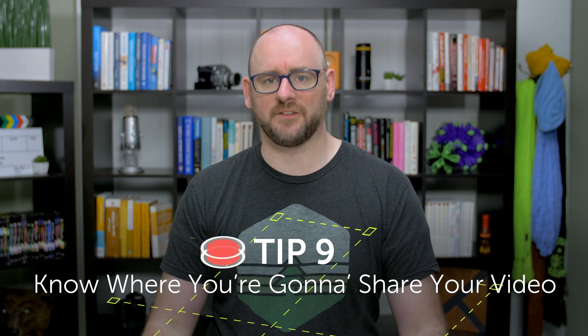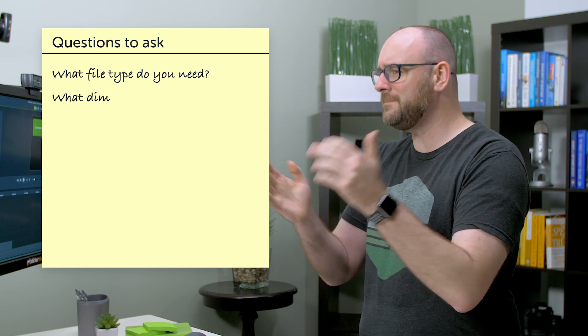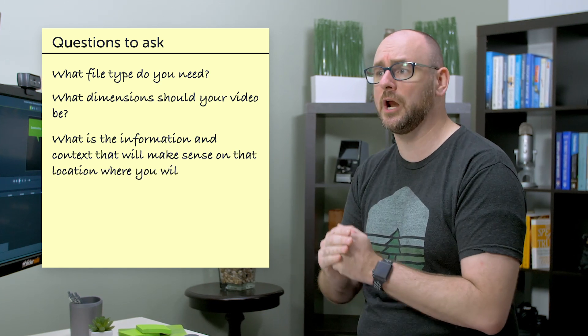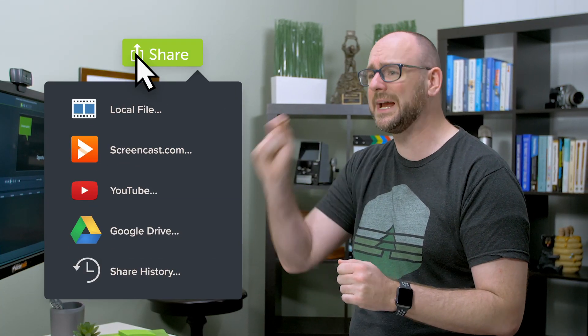Tip 9: Know where you're going to share your video. This is a critical question — not only after you finish, but early in your video creation process. It will help you answer things like what file type you need, what dimensions your video should be, and what context will make sense on that platform. Most programs let you save your file to your desktop and upload manually, or upload directly to a host site like YouTube or Vimeo. Knowing where to share your video will give you the best results with your viewers.